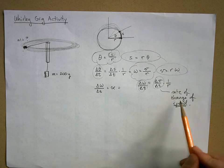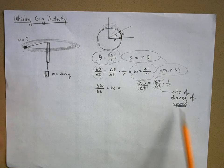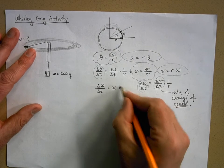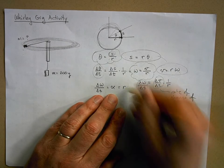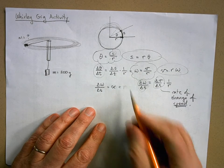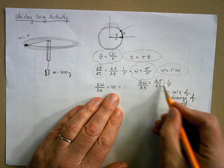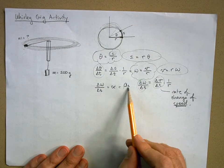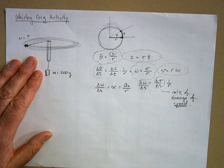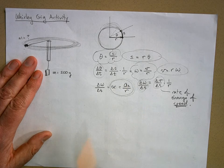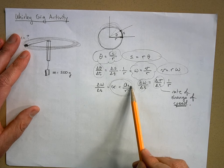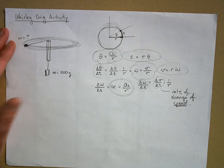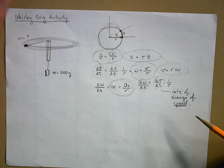For something moving in a circle, the rate of change of speed is called tangential acceleration. So alpha equals tangential acceleration (a_t) over r, or equivalently a_t equals r times alpha. This is the key relationship between tangential acceleration and angular acceleration.